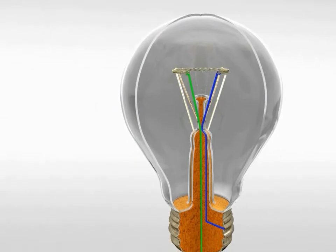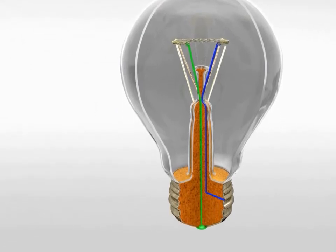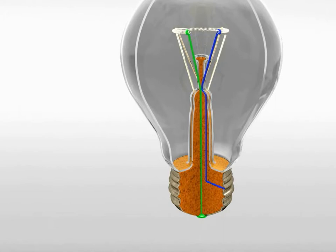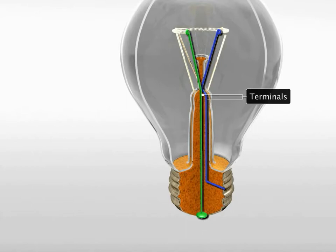The filament is attached to two thick wires. One wire is attached to the lower side of the bulb, and the other is attached at the bottom of the glass part of the bulb. These are the two terminals, positive and negative.